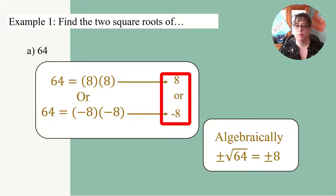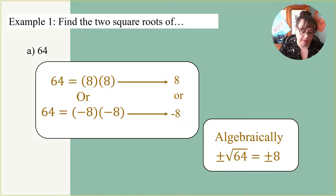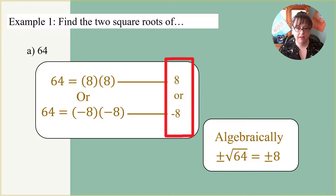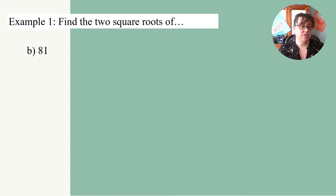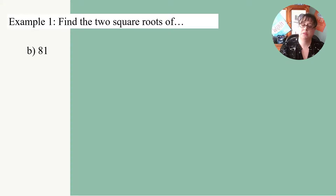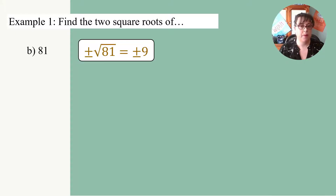How do we represent that algebraically? That's where the plus-and-minus comes in — we can say positive or negative 8, shortened to plus or minus 8. Now let's find the two square roots of 81. What can we multiply by itself to get 81? It's 9. We account for both the positive and negative roots, so plus and minus 9.